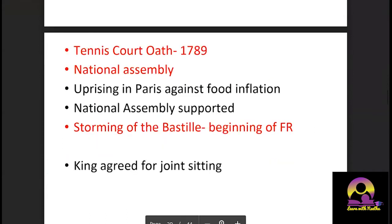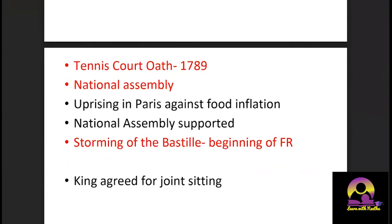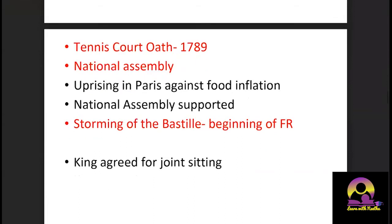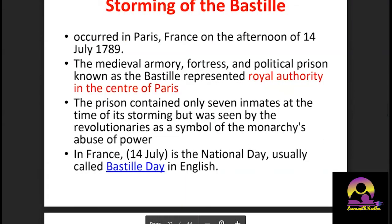In the Tennis Court Oath, they decided that from that day the Third Estate would be known as the National Assembly. At the same time, in Paris there was an uprising against food inflation. The National Assembly supported this uprising, which ended in the violent storming of the Bastille prison — the center of royal authority in France. Louis XVI then agreed to hold a joint session.